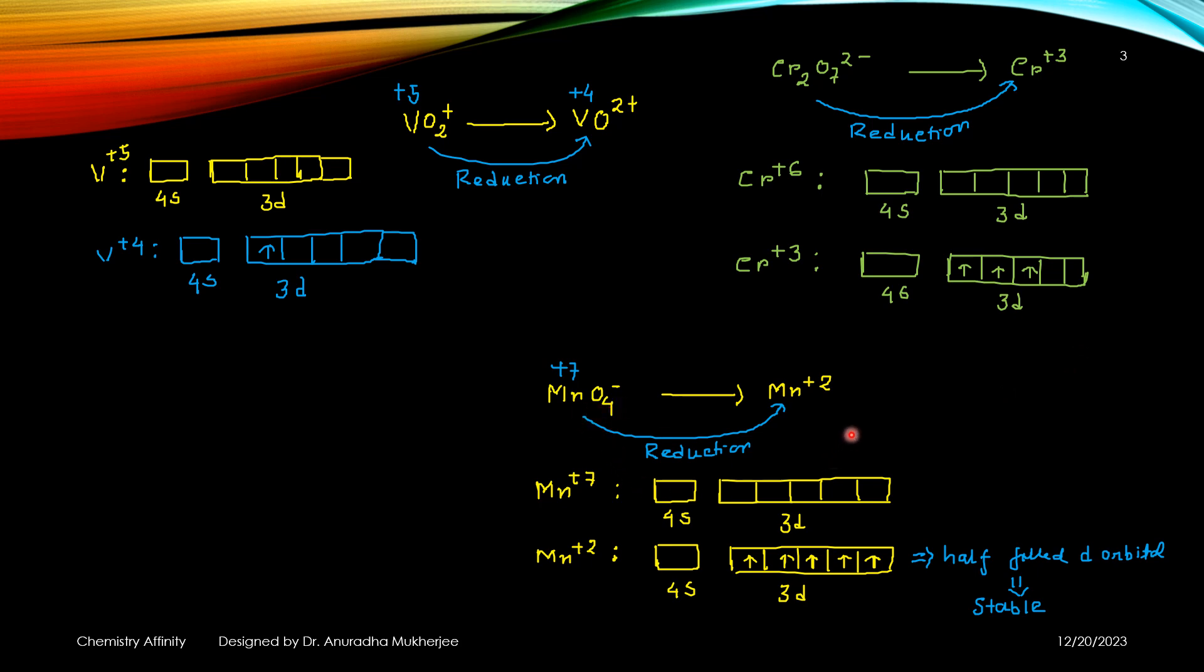MnO4- reduced to Mn^2+, so plus 7 to plus 2. Manganese plus 7 is 4S0, 3D0, manganese plus 2 is 3D5.